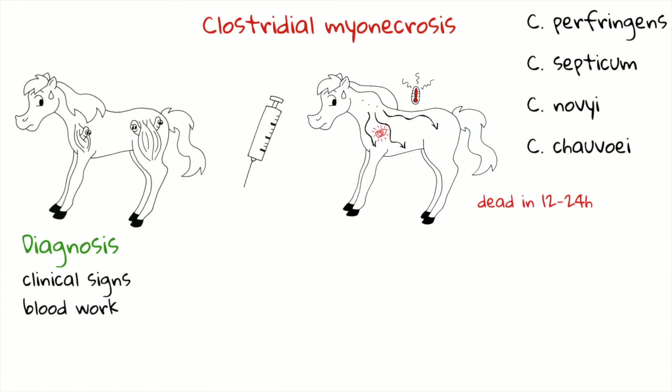On blood analysis you will find hemoconcentration and the stress leukogram. Muscular enzymes may be increased, but as the disease is really acute, the values may not correspond to the real extension of the muscle damage. As it happens also in other myopathies, there is release of myoglobin and therefore there can be pigmenturia. If we perform a fasciotomy, we can detect gram-positive bacilli in the smear of the fluid obtained from the muscles.